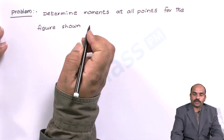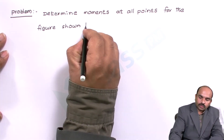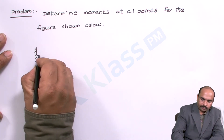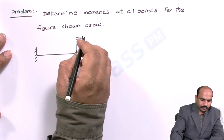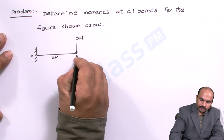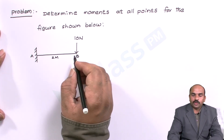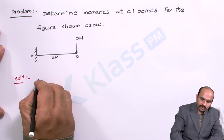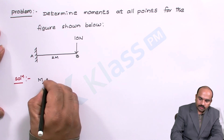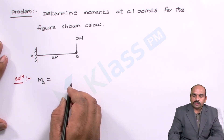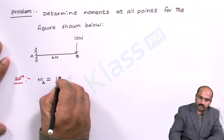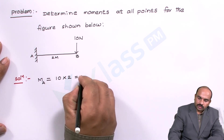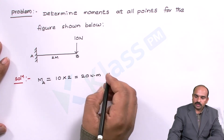The problem is: determine moments at all points for the figure shown below. Let us calculate moment of force at point A. We know moment equals force into perpendicular distance. There is a force of 10 Newtons and its perpendicular distance is 2. So 10 into 2 equals 20 Newton meters, and it is a clockwise moment.